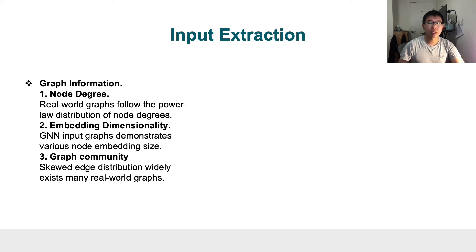Let's start with the input-level information extraction. The first one is graph information. There are three types. The first type is node degree information. Because real-world graphs generally follow the power-law distribution of their node degrees, we remark using the node degree can help us balance the workload.